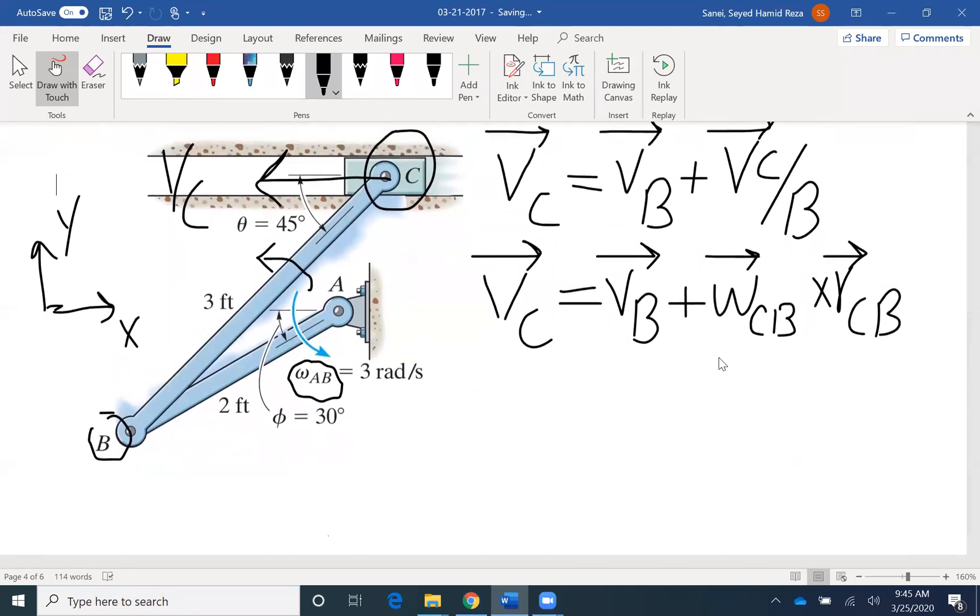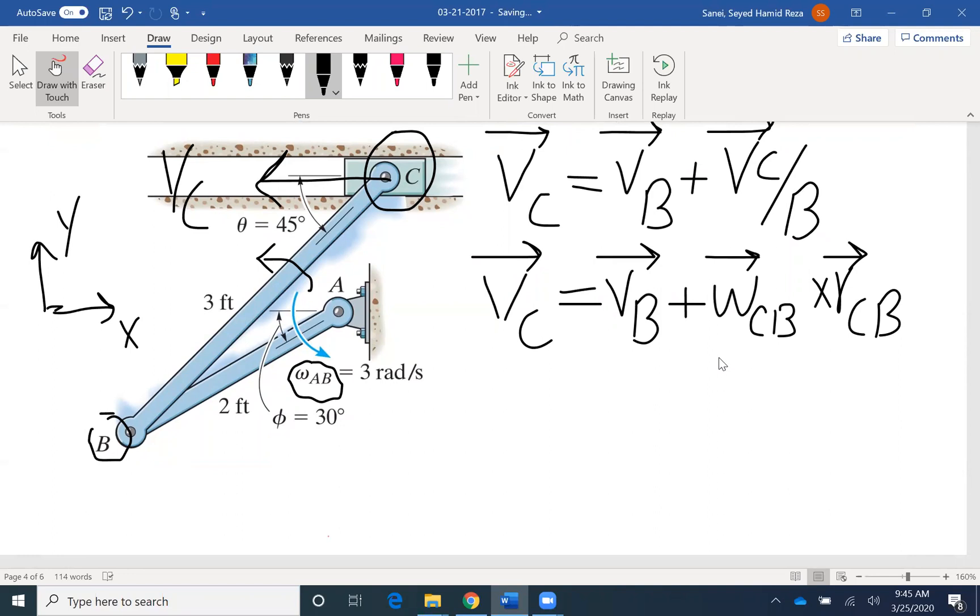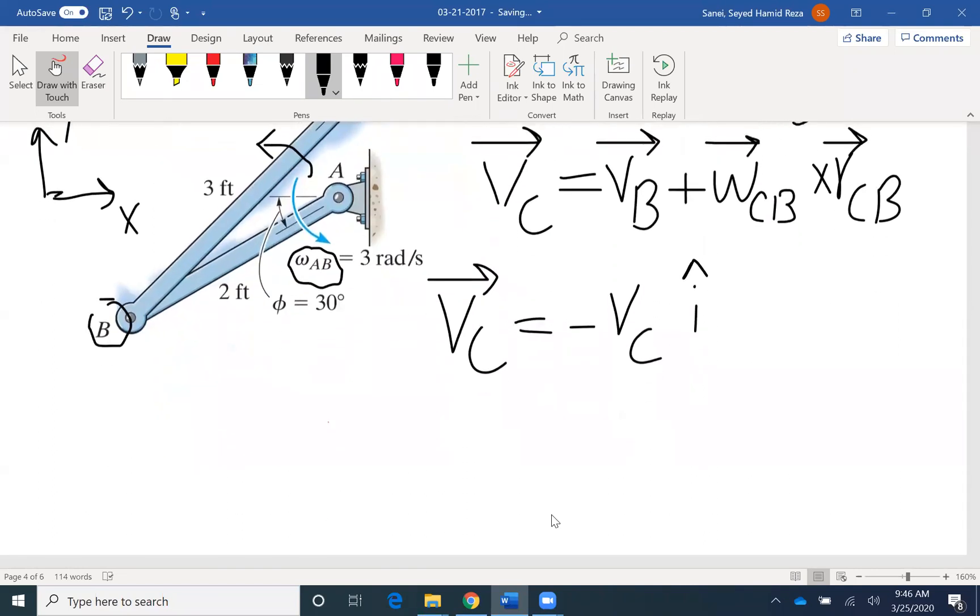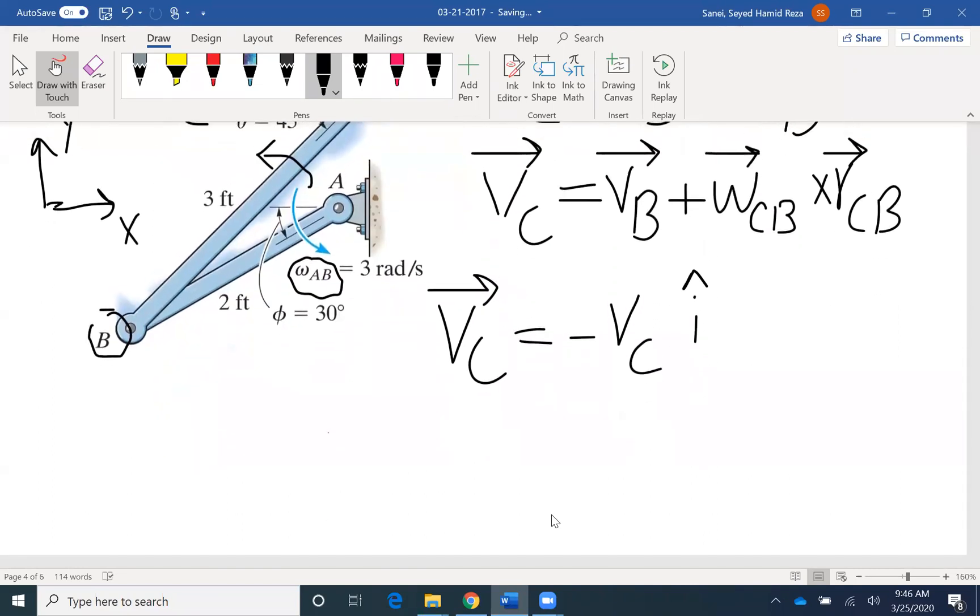Velocity C, we don't know the magnitude, but we know that the block C has to move in that direction, has to move in the X direction. So VC, whatever the magnitude is, VC negative VCI. VB, to find a velocity of B, either I can use the vector formulation or I find VB in a scalar form.